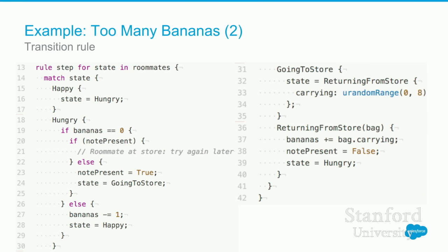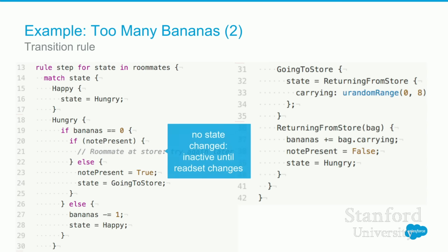If there was no note present, they could set one and head out to the store — they do that atomically. Or if there were bananas at home, they can eat one and become happy. If they're going to the store, they can come back with a random number of bananas between zero and eight. When they're coming back, they add what they're carrying to the bananas at home, remove the note, and go back to hungry. This model even permits the case where you go to the store, bring back bananas, and your roommate eats them all before you get a chance.